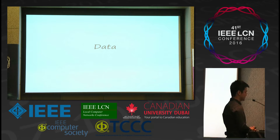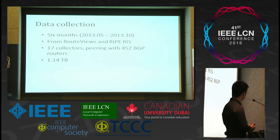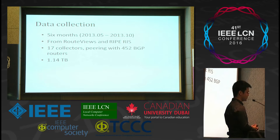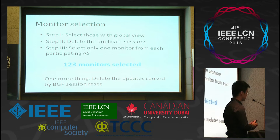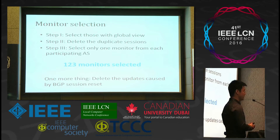We collect data over six months from May to October 2013, from RouteViews and RIPE RIS. The data comes from 17 collectors which pair with 452 BGP monitors on the internet, and the data adds up to 1.14 terabytes. However, not all monitors are suitable for our analysis, so we must select suitable monitors. The first step is to select those with global views to distinguish limited propagation from limited view. The second step is to delete duplicate sessions between the same monitor and multiple collectors. The third step is to select only one monitor from each AS to avoid bias. Finally, we get 123 monitors.